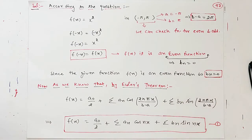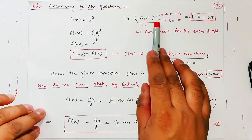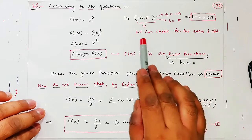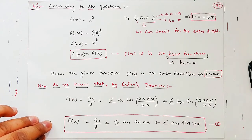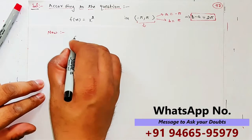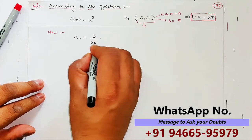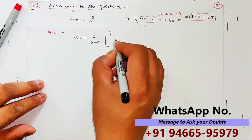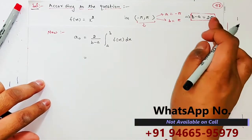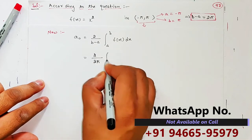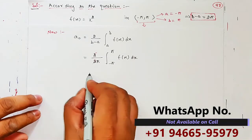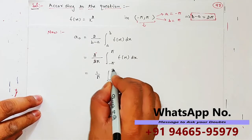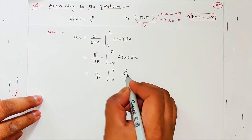Hopefully yahaan tak koi doubt nahi hoga. Toh sabse pehle mere paas given function tha x², limit meri minus pi to pi. Jaise mujhe pata laga limit minus pi to pi hai, toh we can check it for even and odd. Toh maine f(x) ko check kiya — woh even nikla, even nikla toh bₙ = 0. Toh meri yeh integration ho chuki hai. Mujhe sirf a₀ aur aₙ ki value bachi hai. Toh a₀ ka formula aapko pata hai: 2/(b−a) × integral from a to b of f(x) dx. b minus a ki value yahan 2π hai, aur limits minus pi to pi. 2 se 2 kat gaya, toh 1/π × integral from −π to π of x² dx.